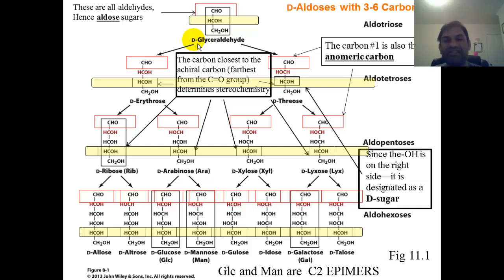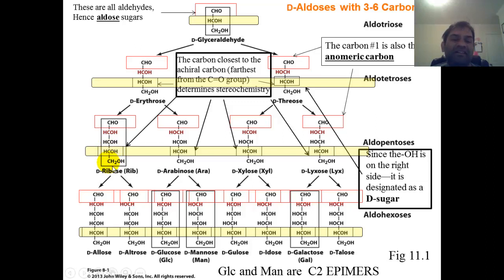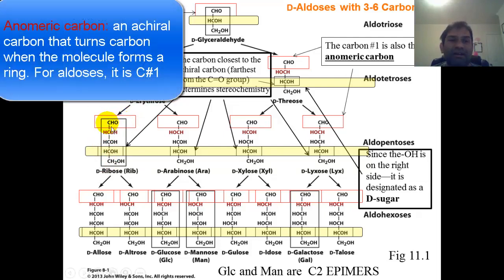In reality, these sugars are not linear and not flat as depicted in a Fischer projection. They are very much three-dimensional entities. Looking at ribose: carbon one is the aldehyde carbon and is not chiral because of the double bond. Carbon two is chiral, carbon three is chiral, carbon four is chiral, carbon five is not chiral. We define an anomeric carbon as the carbon that is not chiral but suddenly becomes chiral when the molecule forms a ring.